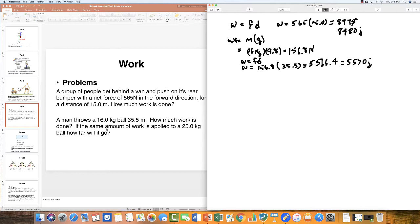The second part of this problem says the same amount of work is applied to a 25 kilogram ball. How far will it go? We have work equals force times distance. We want to know the distance, so that equals the work divided by the force. That's 5570 divided by—now it's 25 kilograms, so 25 times 9.8 to get the weight. If we do the math, the answer is 22.7347, and to three significant figures, it's 22.7 meters.